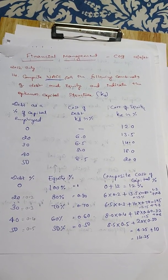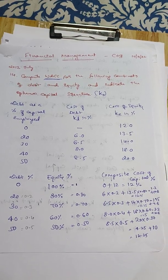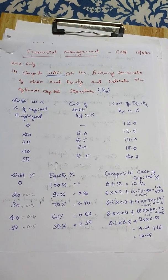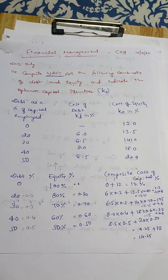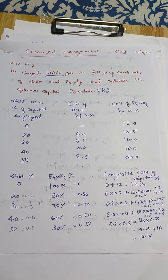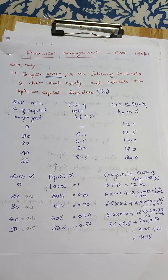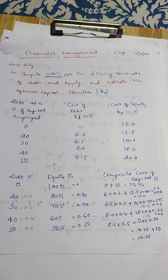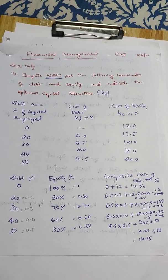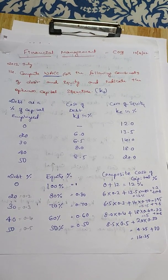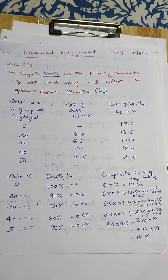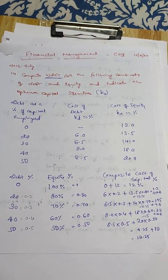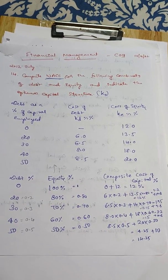Today we are covering WACC — Weight Average Cost of Capital. This is the third method, the third kind of problem. This is problem number 14: Compute WACC, Weight Average Cost of Capital, for the following combination of debt and equity and indicate the optimum capital structure.